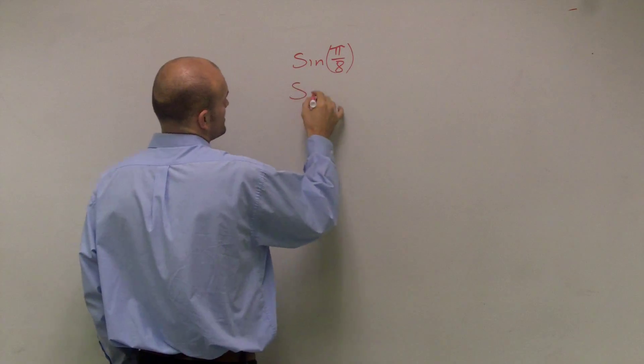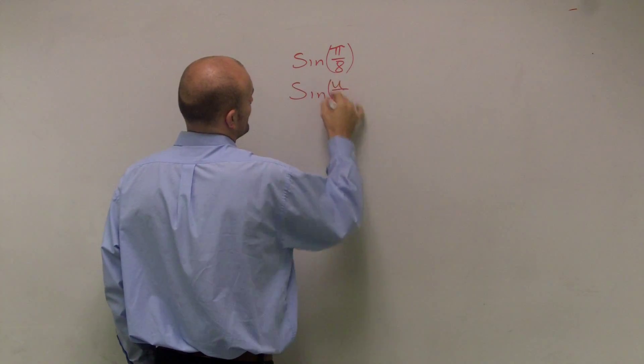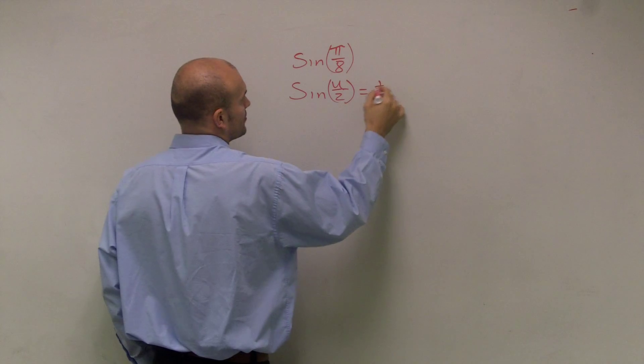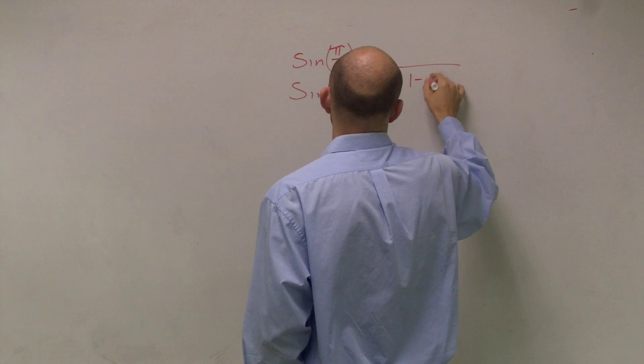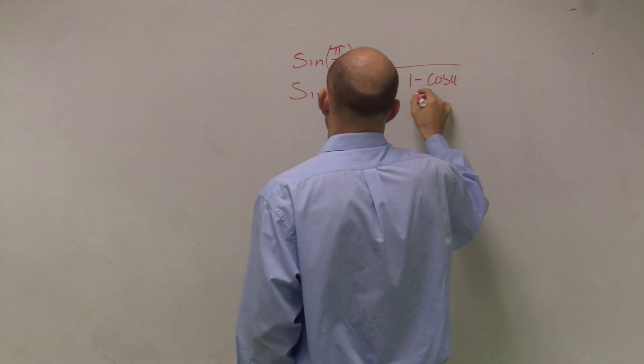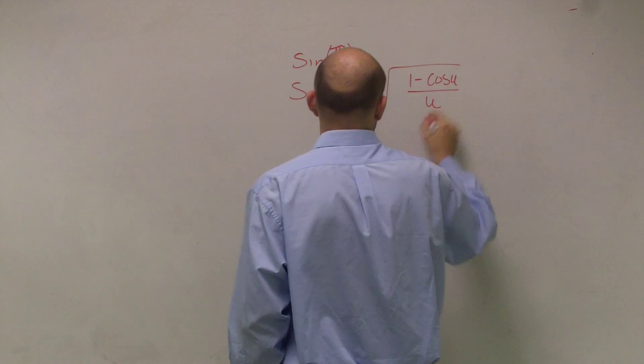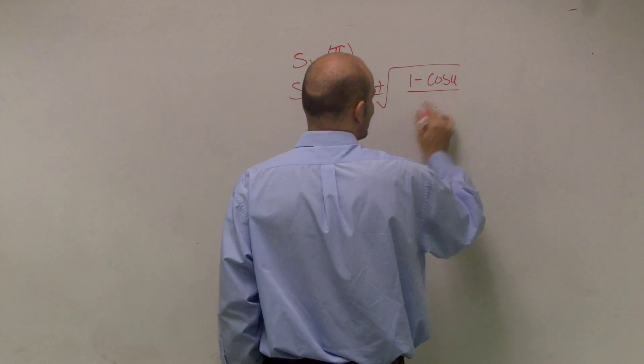So the half-angle formula states that sine of u divided by 2 equals plus or minus the radical of 1 minus cosine of u all divided by 2.